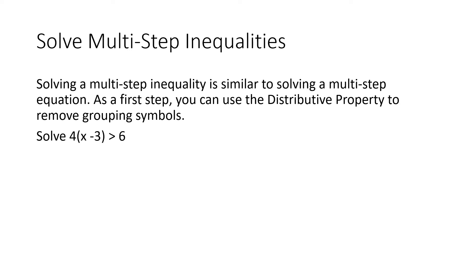Solving a multi-step inequality is basically the same as solving a multi-step equation. We're going to use the distributive property to remove grouping symbols, use the addition and subtraction properties to isolate the variable, and remember that if we multiply or divide by a negative number we have to reverse our inequality symbol. As long as we remember those rules, we can approach these the same way. Let's solve 4(x − 3) > 6.